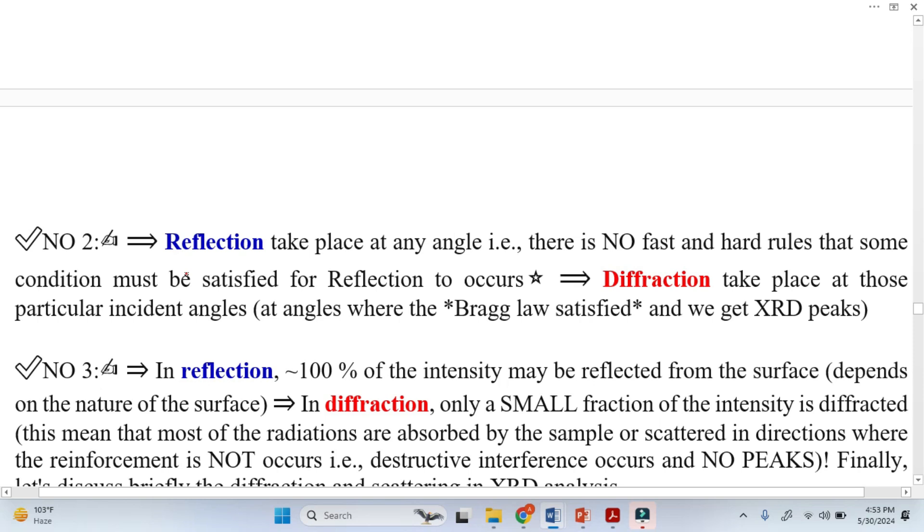Look at the second one. Reflection takes place at any angle. There is no fast and hard rule for this. But diffraction can only take place when there is Bragg's law satisfaction. When Bragg's law is satisfied, diffraction can take place. This is why we have 2θ in the XRD spectrum. We only get peaks once Bragg's law is satisfied. And that angle is called diffraction.